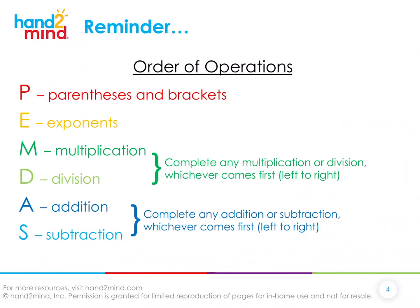As a reminder, we always need to make sure we're following order of operations. First we start with parentheses or brackets — working parentheses first, then brackets, then we move on. Then exponents. Then multiplication or division, whichever comes first moving left to right. Then addition and subtraction, again using whichever comes first moving left to right. We always need to remember PEMDAS — please excuse my dear aunt Sally.